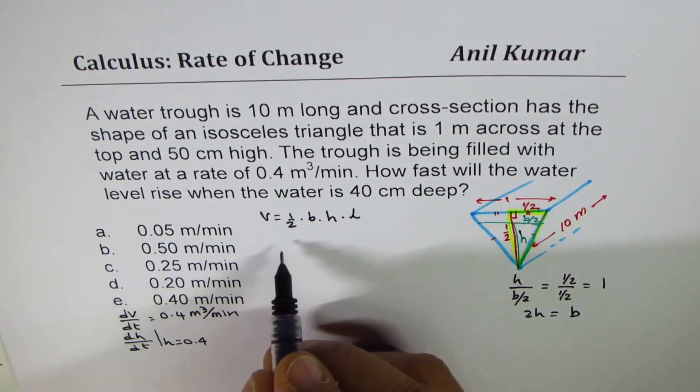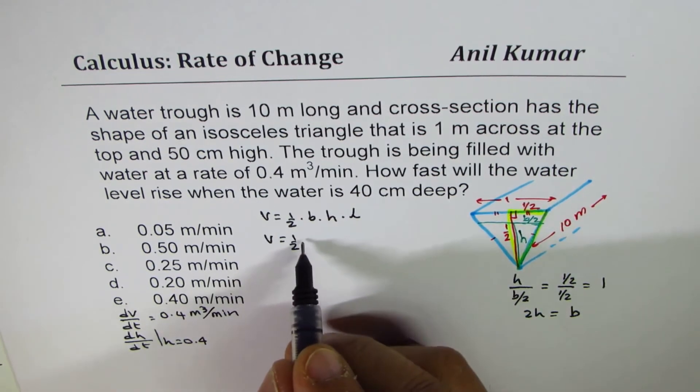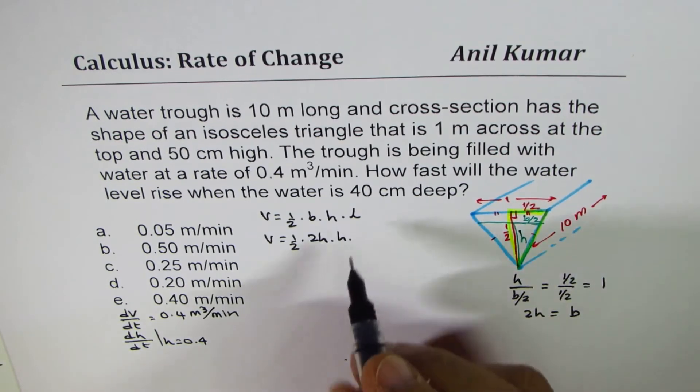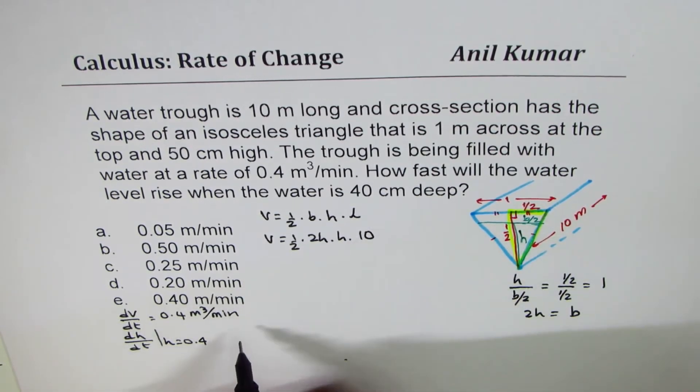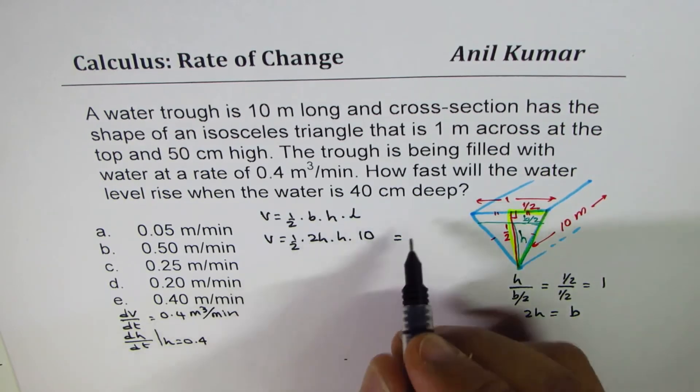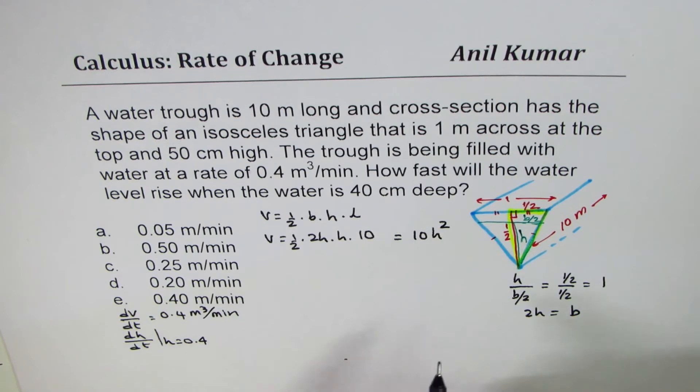Replacing these values, we get volume equals to half, base is 2 times height, times height, and the length is fixed to 10. So that gives us 2 and 2 cancel, 10 h square. That's the volume.